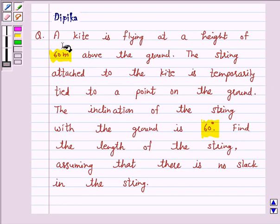Let's discuss a question which says a kite is flying at a height of 60 meters above the ground. The string attached to the kite is temporarily tied to a point on the ground. The inclination of the string with the ground is 60 degrees. Find the length of the string assuming that there is no slack in the string.